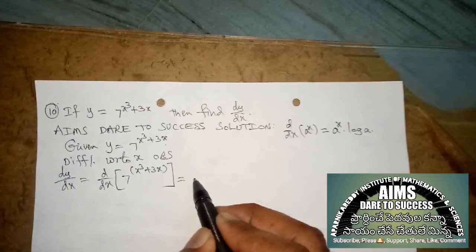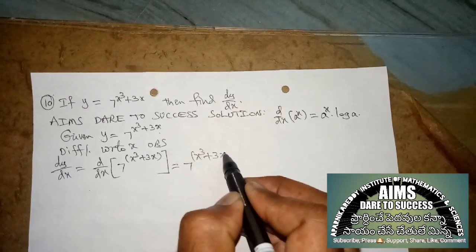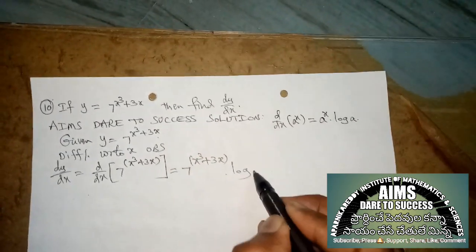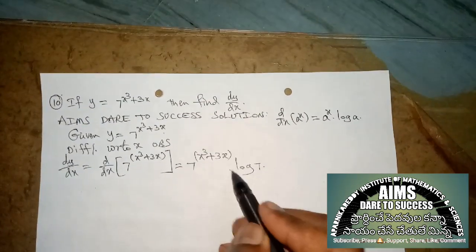Substitute: 7^(x³ + 3x) into log(7). So the formula uses 7 power (x³ + 3x).